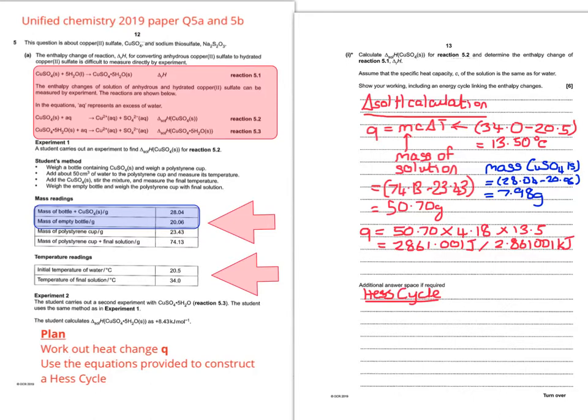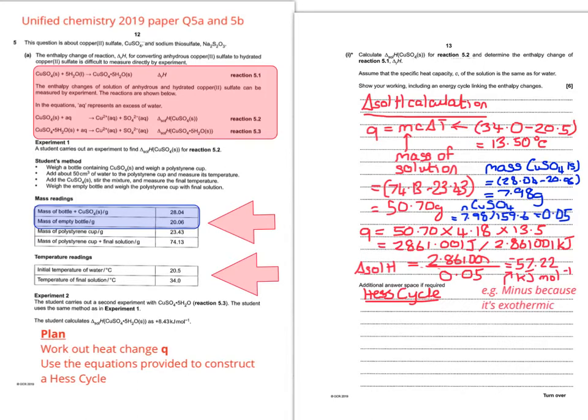So now what we can do is work out the delta sol H. So to do this, we need to divide the value for Q in kilojoules by the number of moles of copper sulphate that were used. So the number of moles was 0.05. So that gives us 57.22 kilojoules per mole to the minus 1.